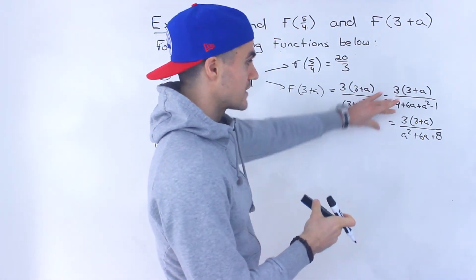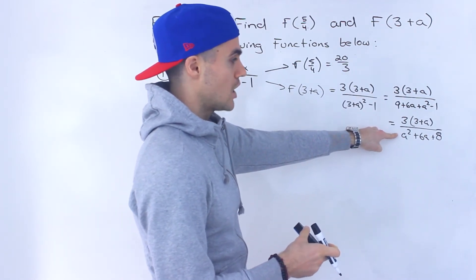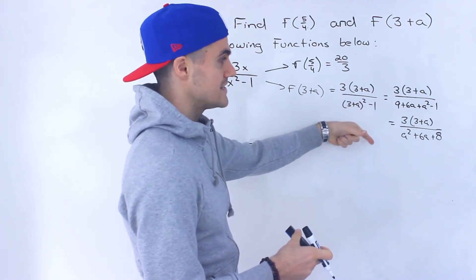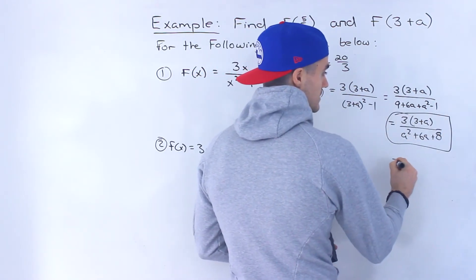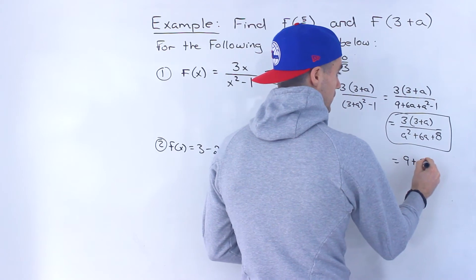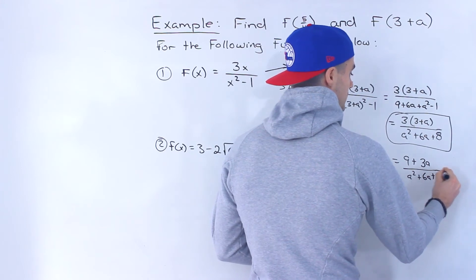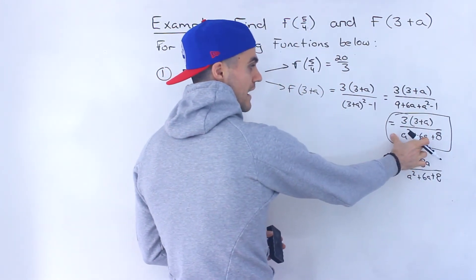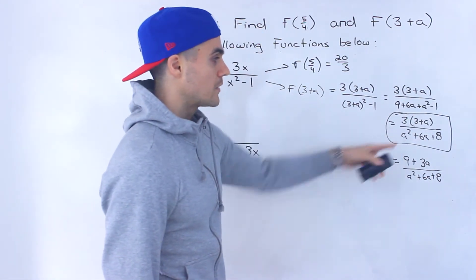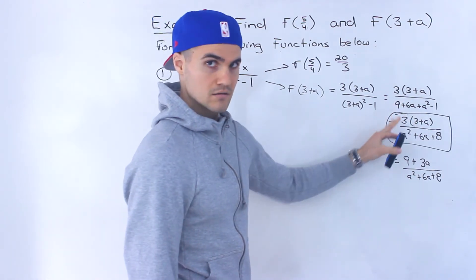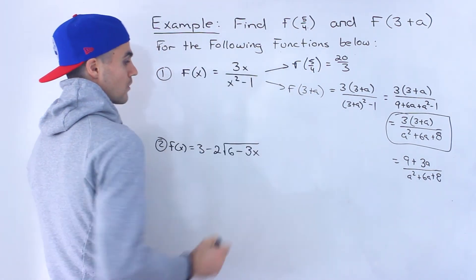We simplify the denominator to a squared plus 6a plus 8. I kept the numerator factored to see if we could factor the denominator and cancel terms. But a squared plus 6a plus 8 doesn't factor smoothly with the numerator, so the final answer is 3 times (3 plus a) over (a squared plus 6a plus 8), or equivalently (9 plus 3a) over (a squared plus 6a plus 8).